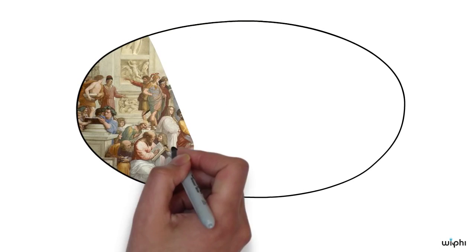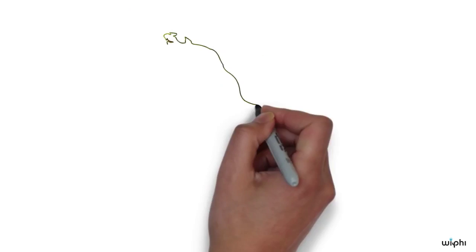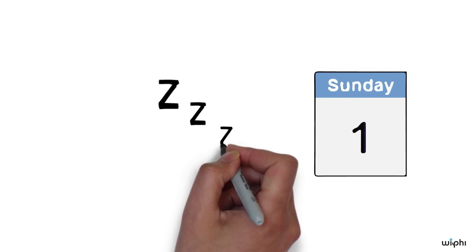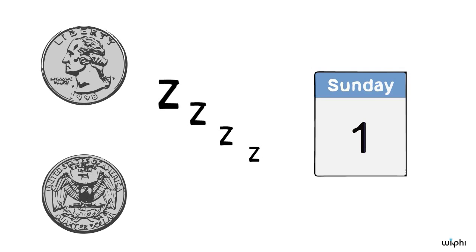Imagine one day that some philosophers get together and decide to run an experiment on poor old sleeping beauty. Right now it's Sunday and they tell her that the following will take place. First of all, they will of course put sleeping beauty to sleep. Then they will flip a fair coin, which just means that there's a 50-50 chance that the coin will land heads or tails.